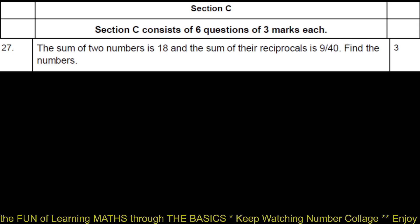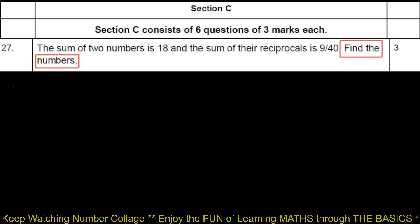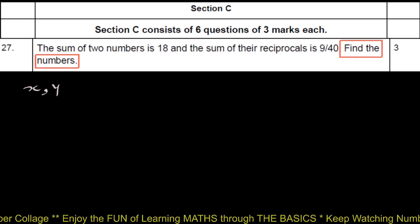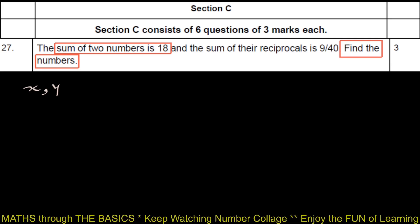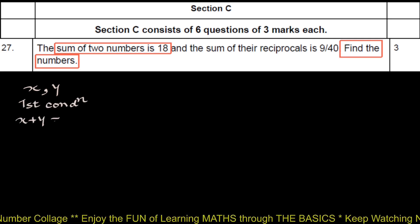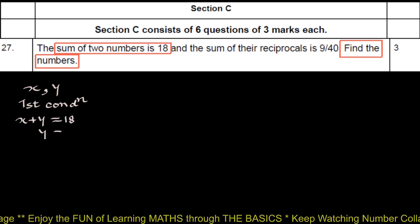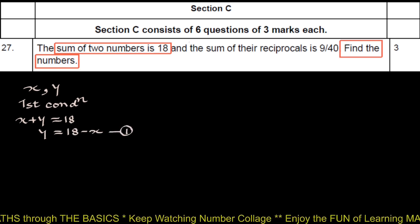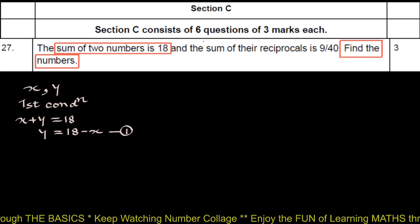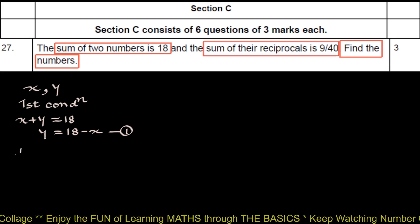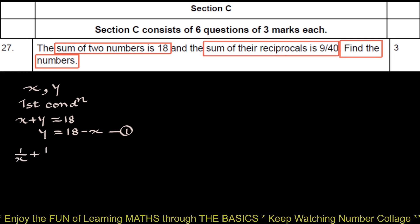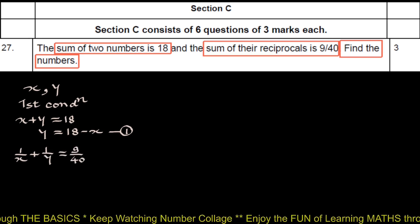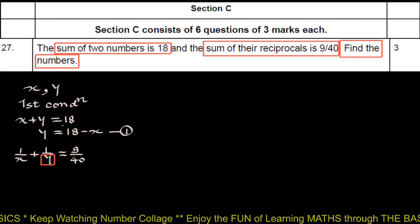We will start from the question. Find the numbers. Let the numbers be x and y. From the first condition, sum of numbers is 18. We write x plus y equals 18, y equals 18 minus x. We name this 1. According to second condition, sum of their reciprocals is 9 upon 40. We write 1 upon x plus 1 upon y equals 9 upon 40. We replace this y by 18 minus x.